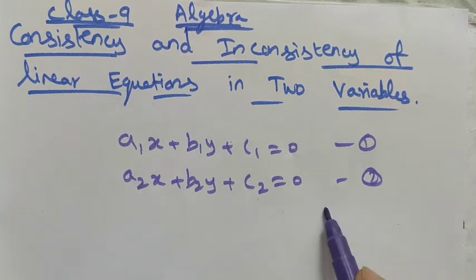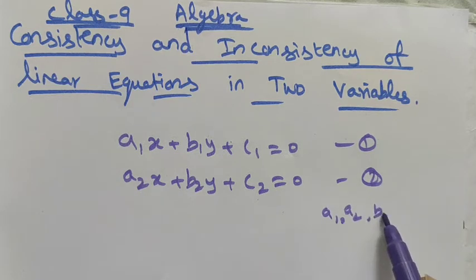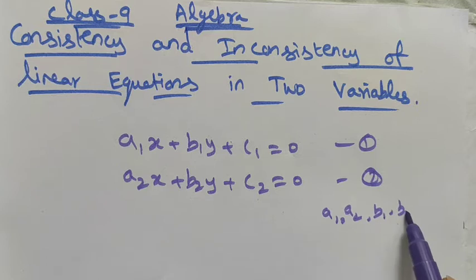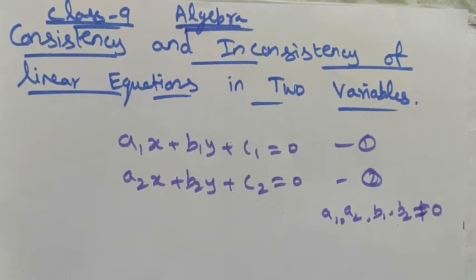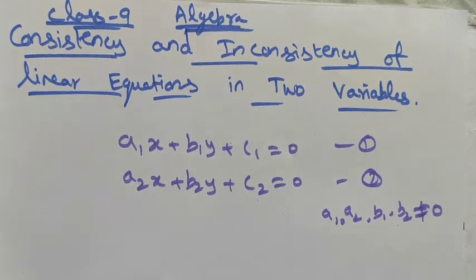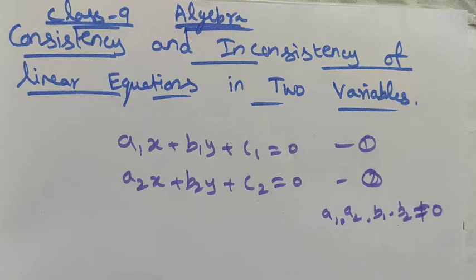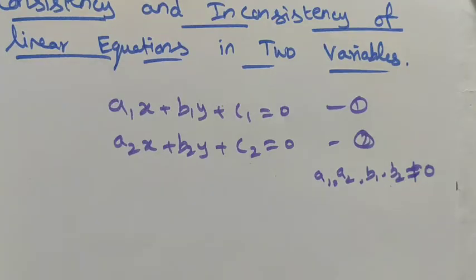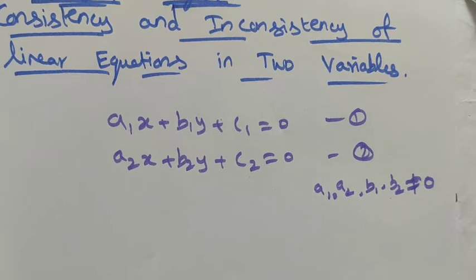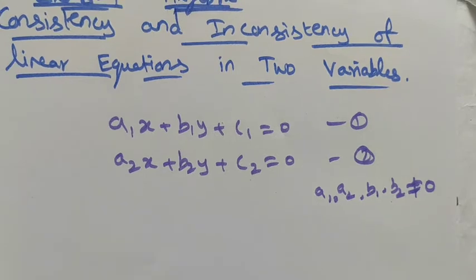The condition is that a1, a2 and b1, b2 are not equal to 0. That is the condition because a, b, c are real numbers. For linear equations in two variables, a1, a2, b1, b2 must not be equal to 0. Now, first of all, we want to know what consistency and inconsistency mean.